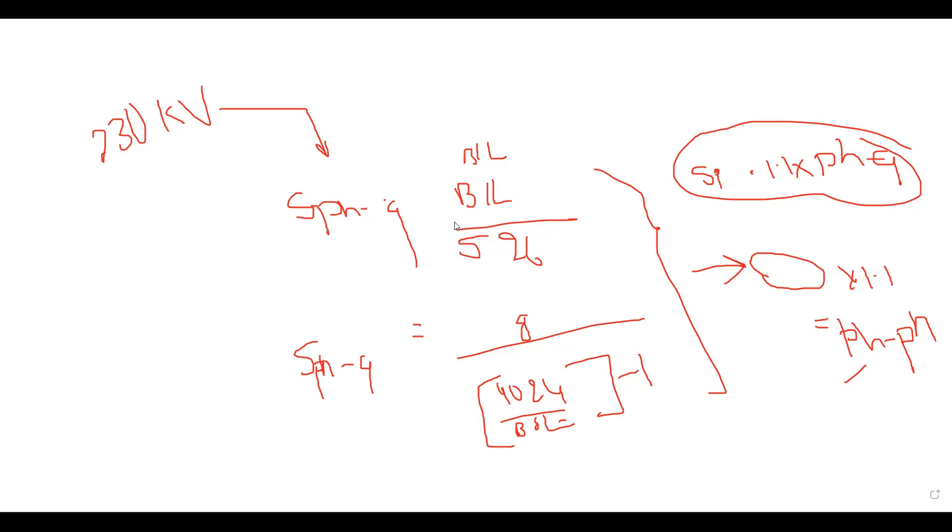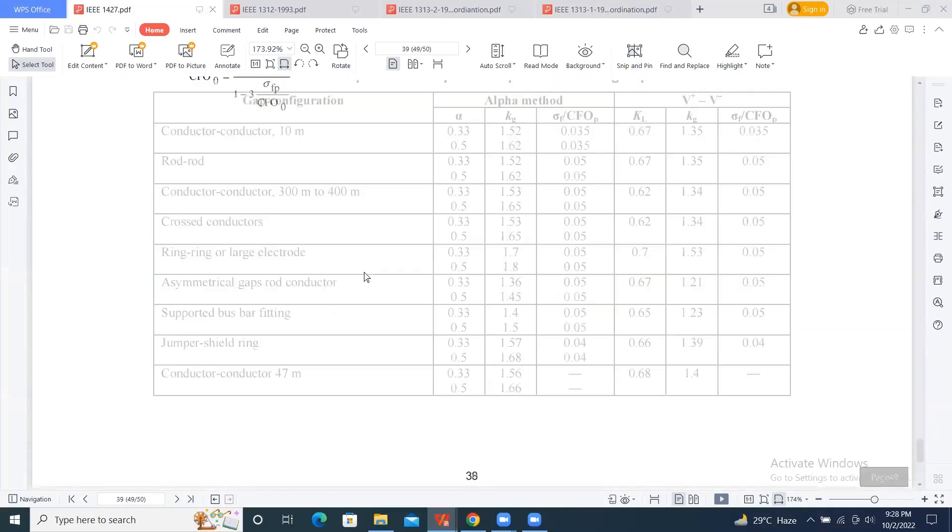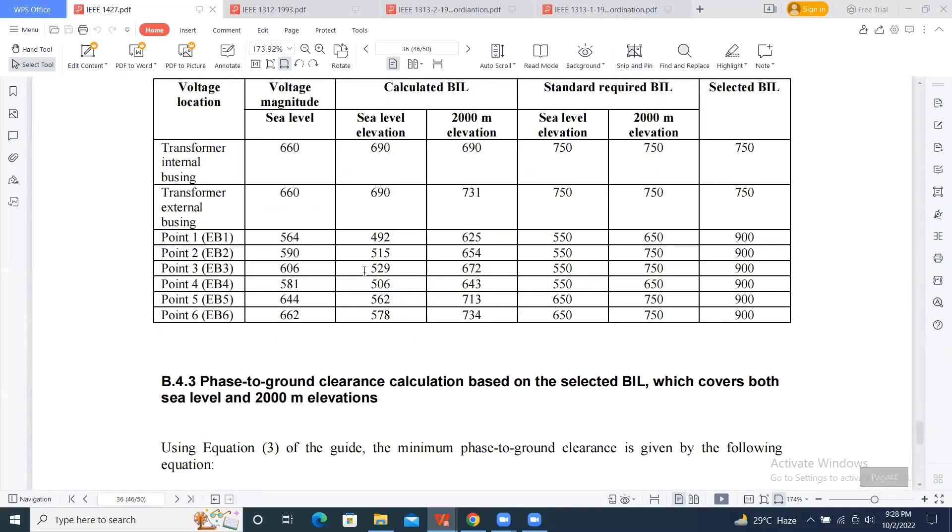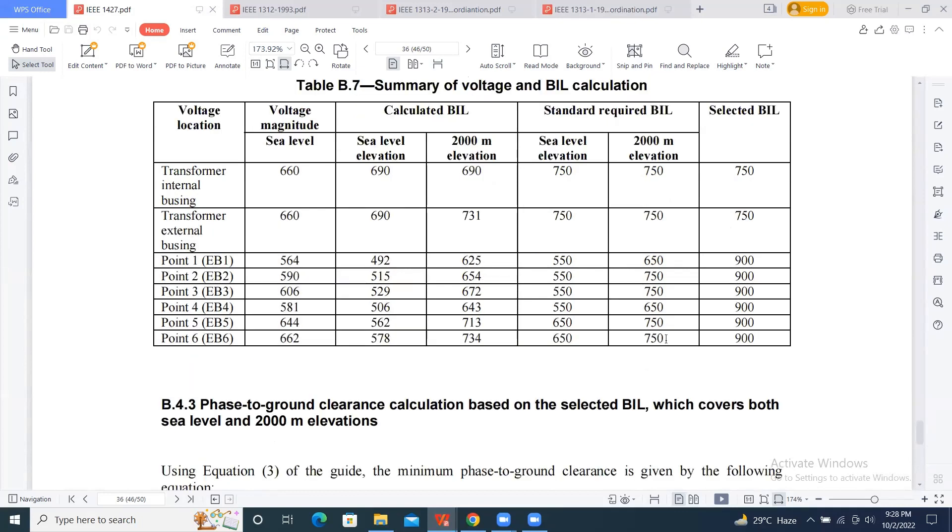If you see in this one, why you can see this 750, mostly 657? Because these are far away from the lightning arrester.